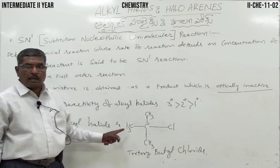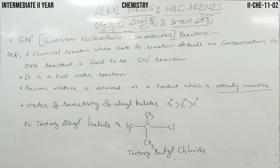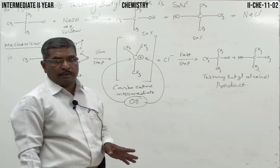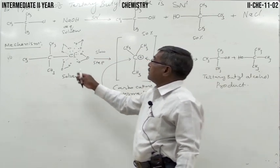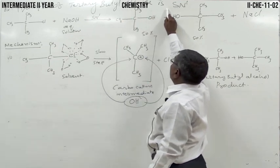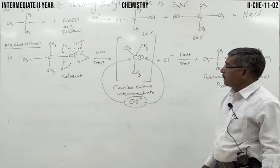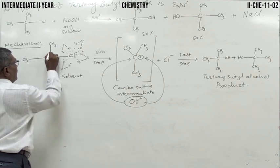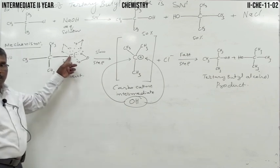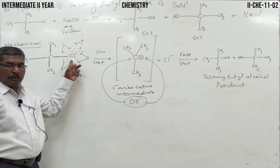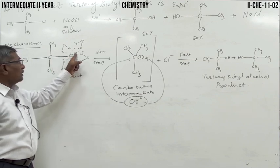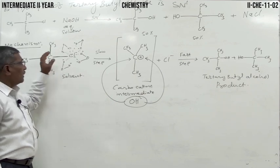Tertiary butyl chloride is a tertiary alkyl halide; it undergoes SN1 reaction. Let us take tertiary butyl chloride. Chlorine has higher electronegativity (3.0) than carbon (2.5), so there is slight polarization toward chlorine — it gets a slight negative charge and carbon gets a positive charge. Water molecules as polar solvent solvate around the chloride ion and drag the chlorine out.